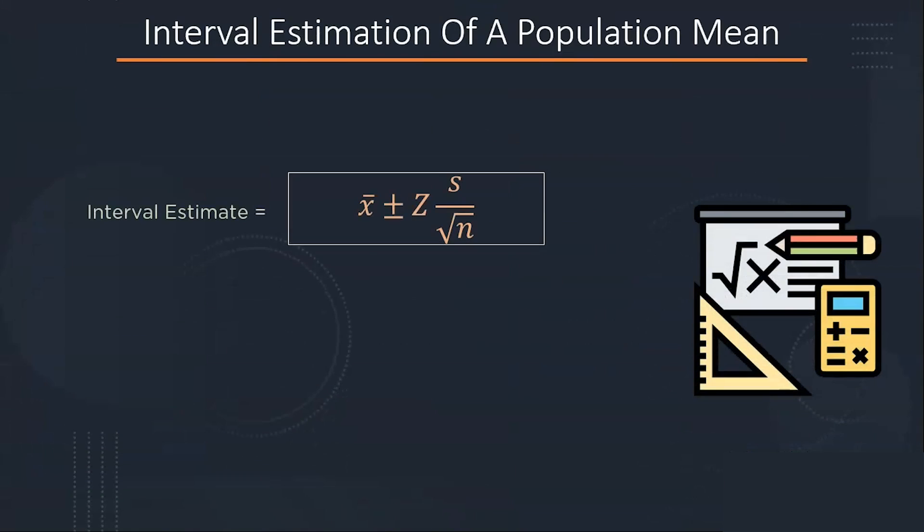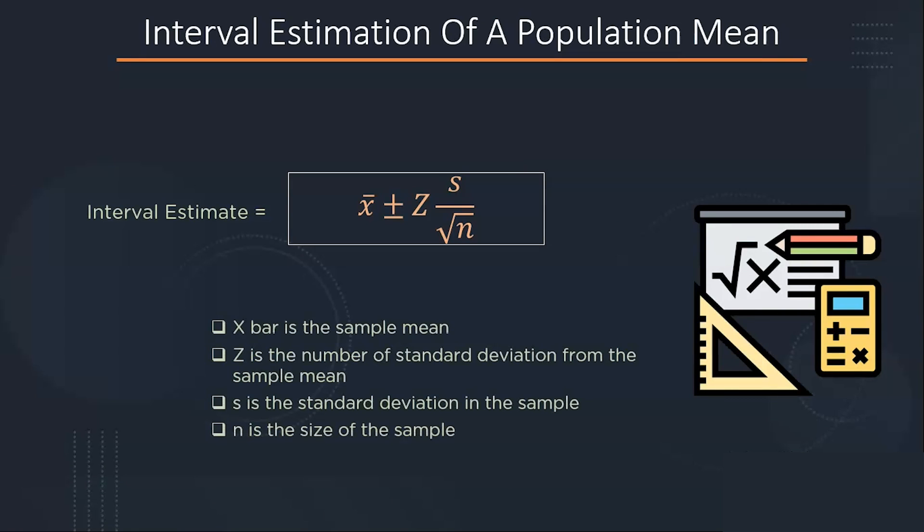The general form of the interval estimate is x bar plus minus margin of error. To calculate the interval estimate, we have the formula x bar plus minus z times s divided by root n. Where x bar is the sample mean, z is the number of standard deviations from the sample mean, s is the standard deviation and n is the size of the sample.